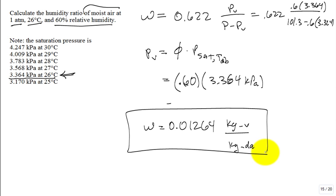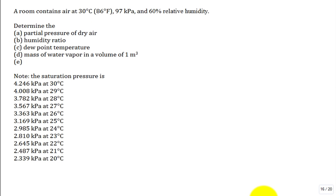The humidity ratio is the property that mechanical engineers use most when studying air conditioning — heating air, cooling air. It's favored because the mass flow rate of dry air doesn't change: there's no mechanism to condense or vaporize dry air. But water can condense on a cooling coil or be added by spraying in liquid water or steam to humidify. Water is always being added and removed in air conditioning applications.